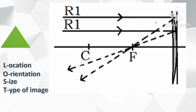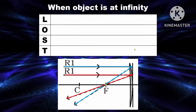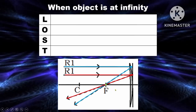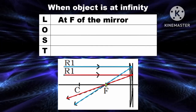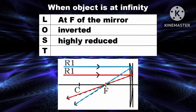Since the object is beyond, we need to strike the ray into the mirror and reflect it to the focus — same with the other one. The intersection between the two rays will be the location of the image. In terms of location, the image is found at F. The orientation is inverted. The size is highly reduced. And the type of image is real. Remember that a real image is formed in front of the mirror.